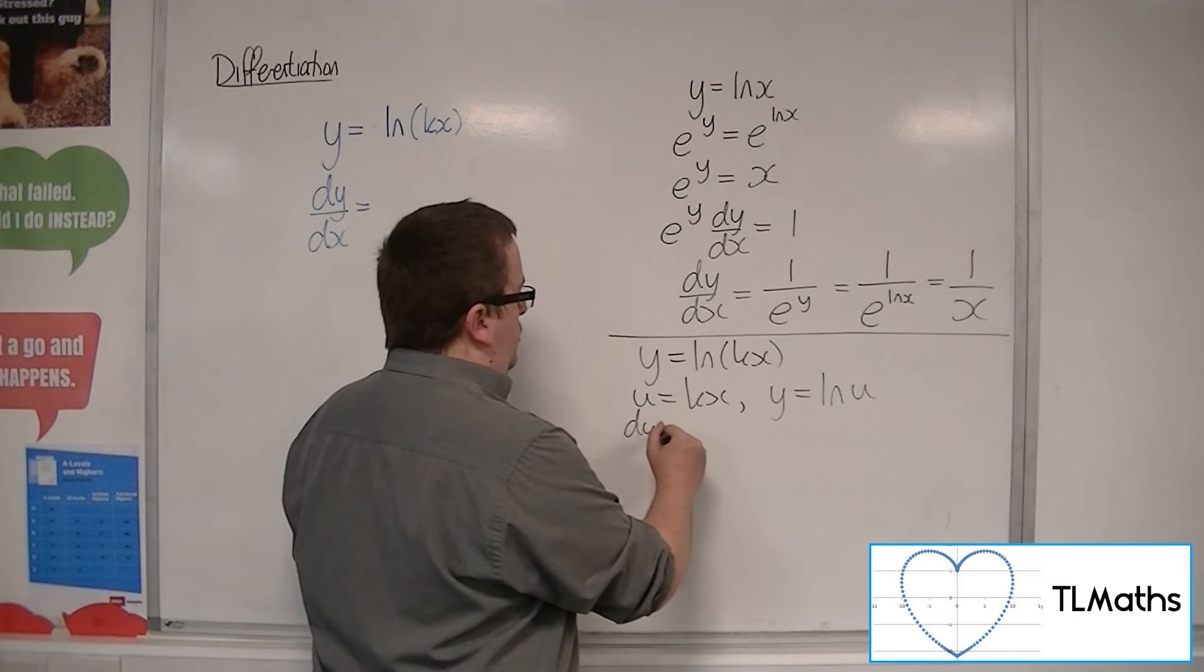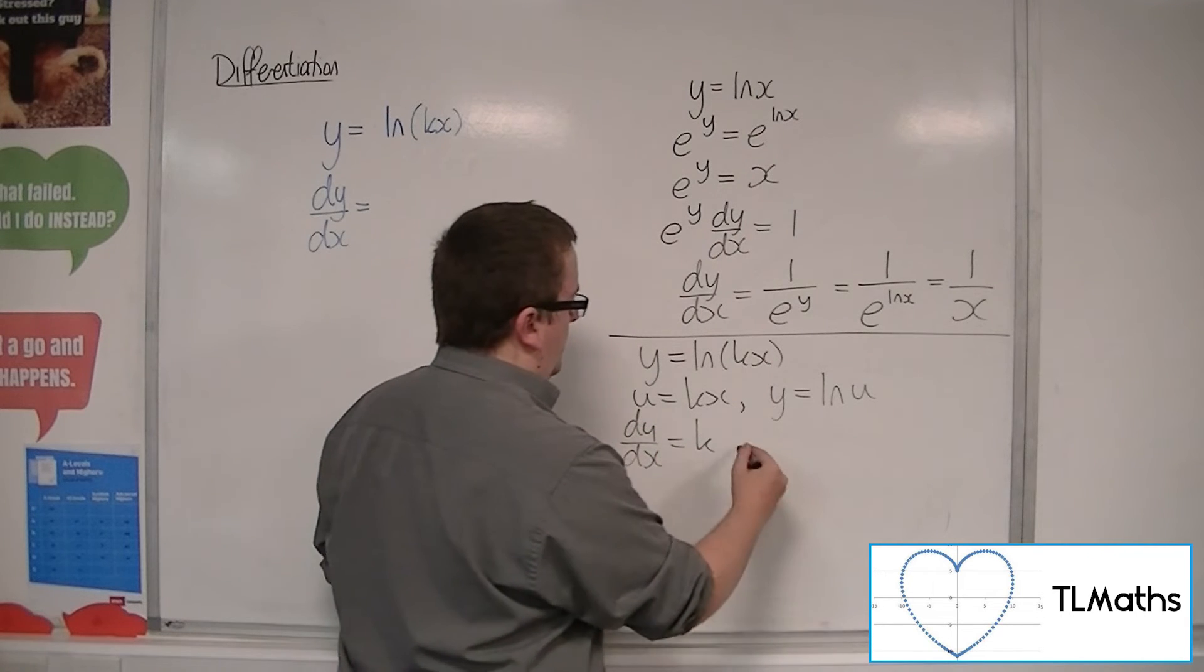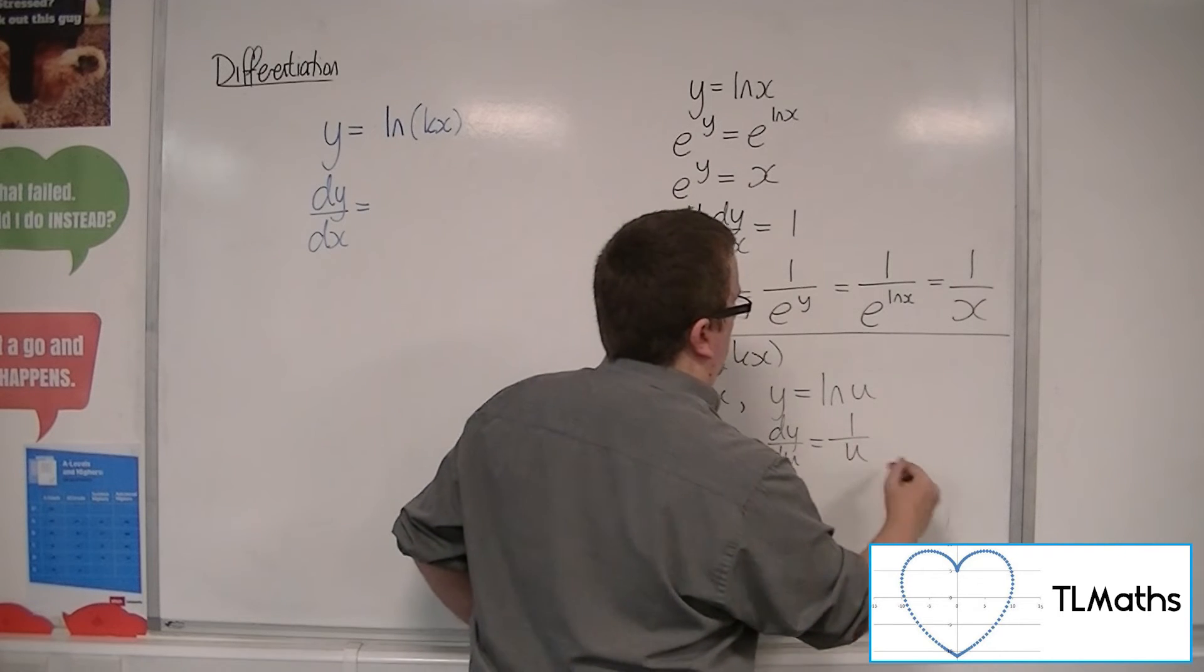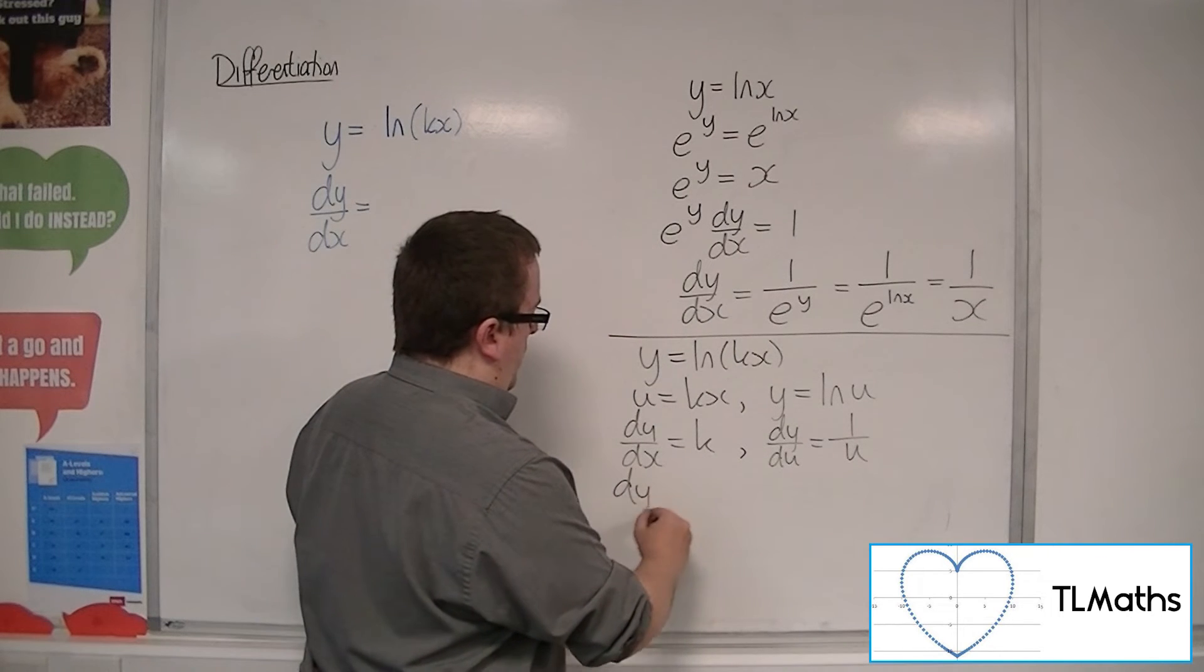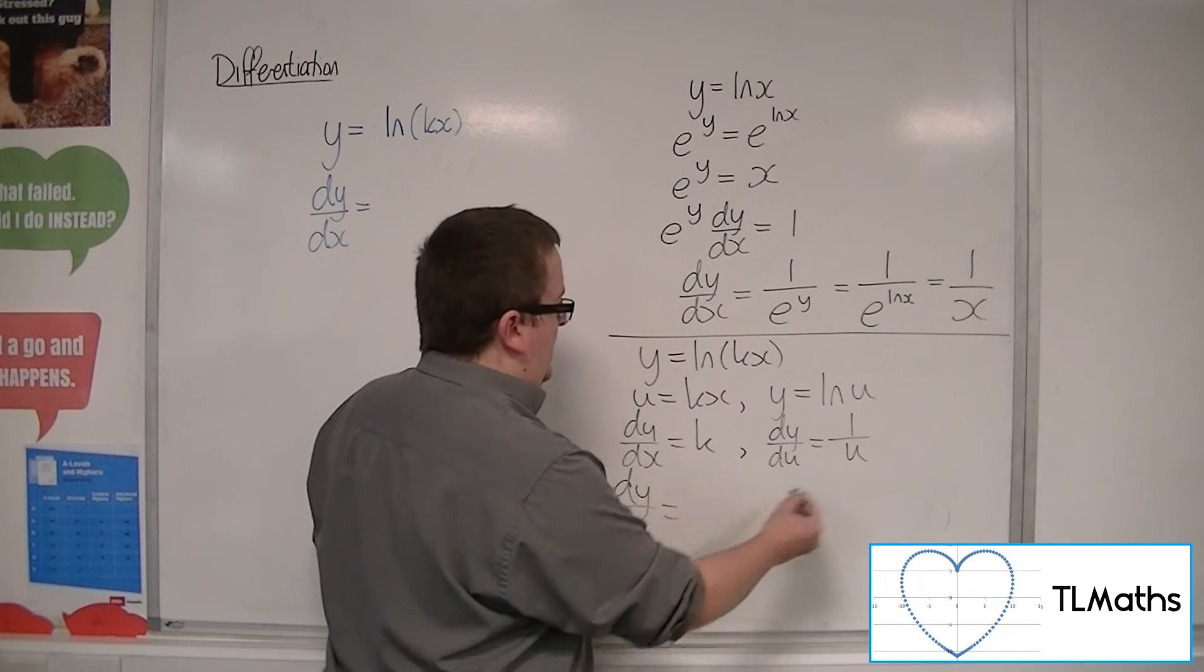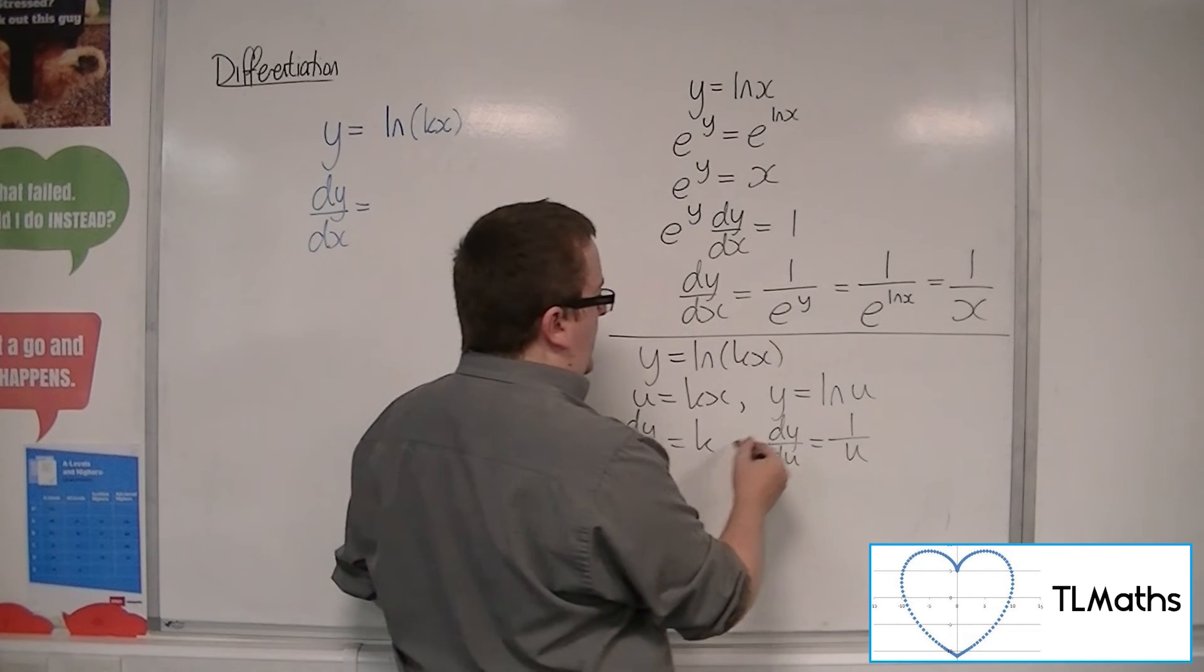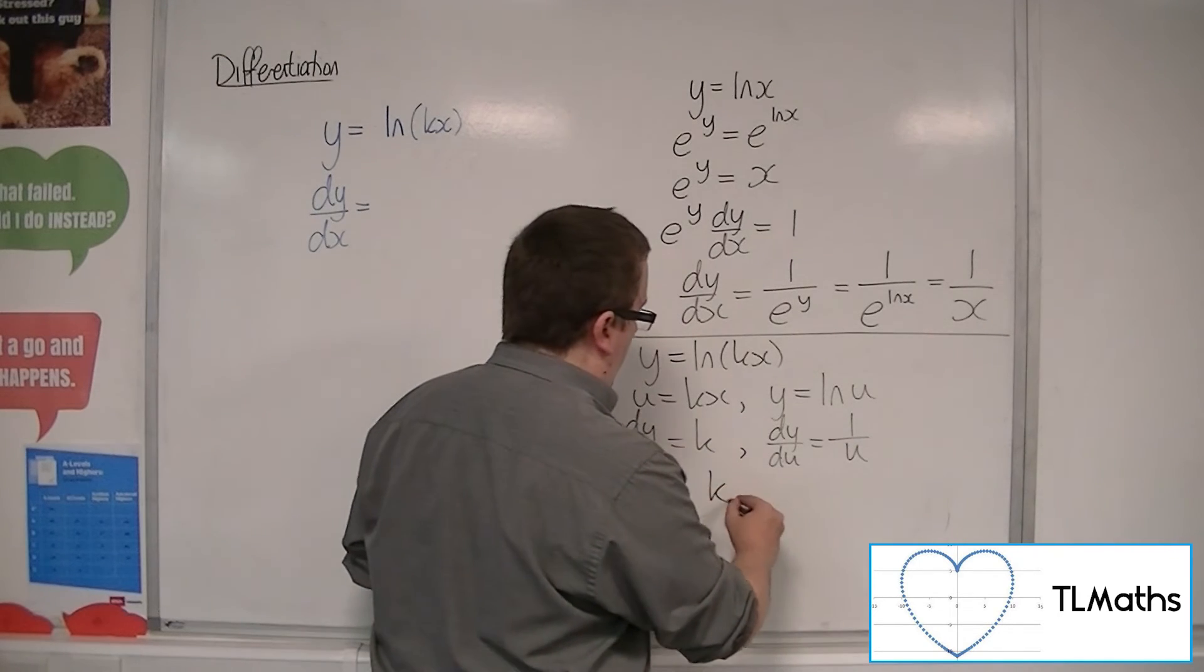So du by dx is k. Dy by du, we now know, is 1 over u. So dy by dx is dy by du times du by dx, which is k times 1 over u, so k over u.